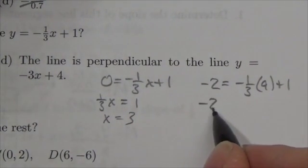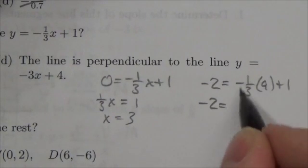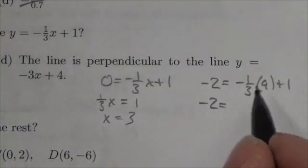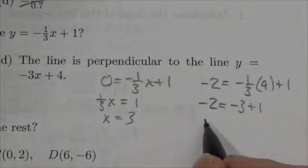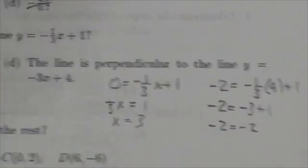Okay, well, negative one-third of nine, okay, I have to do this multiplication first here, is just going to be negative three plus one. Well, negative three plus one, that is negative two. So, yep, that is true.